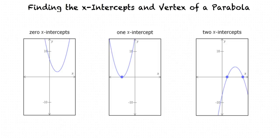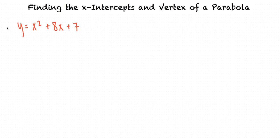Let's try finding the x-intercepts and coordinates of the vertex for the parabola y equals x squared plus 8x plus 7. First, we set y equal to 0, leaving us to solve for x in order to find the x-intercepts.